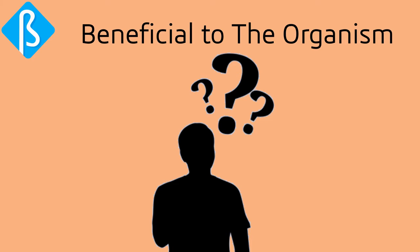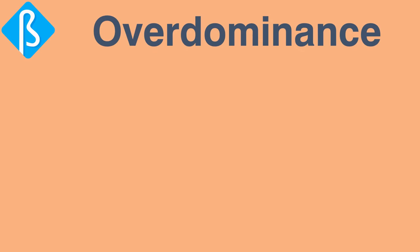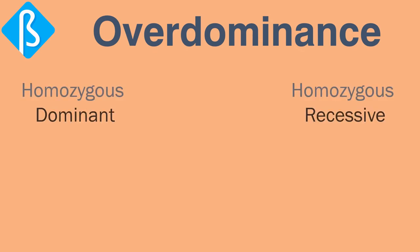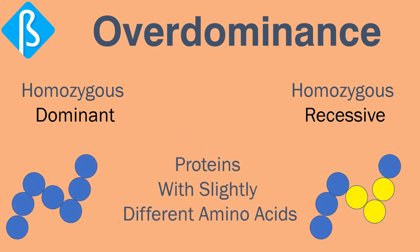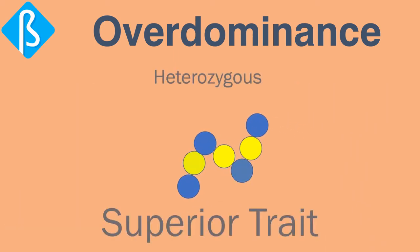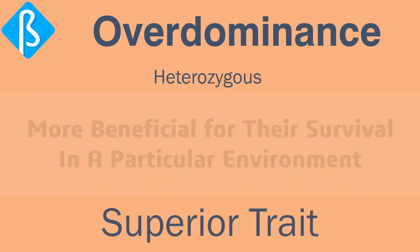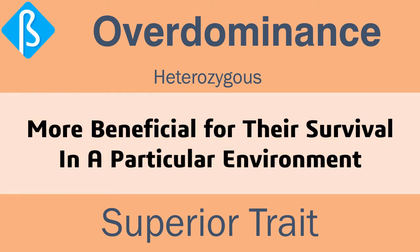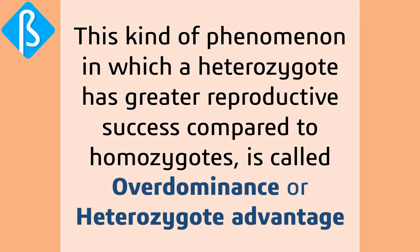The next phenomenon, over-dominance, is certainly beneficial to organisms. Over-dominance is usually due to two alleles that produce proteins with slightly different amino acids. Sometimes this makes the heterozygous individual superior for certain traits. This phenomenon — where heterozygous individuals have greater reproductive success compared to homozygous individuals — is called over-dominance or heterozygous advantage.